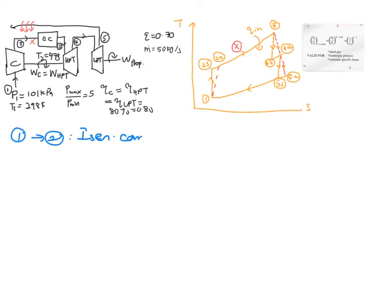isentropic compression. Because of this isentropic relation, you can make use of this value to find whatever value you're looking for. In this case, it is T2S over T1. Now, you're either going to use the pressure relation or the specific volume relation. Given to you, P_max over P_min is 5, which in this case, this is your minimum pressure, this is your maximum pressure. So it is